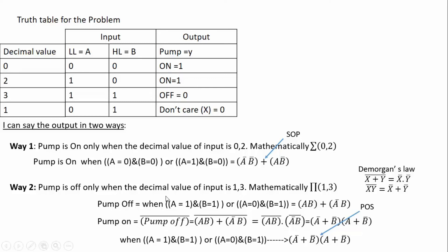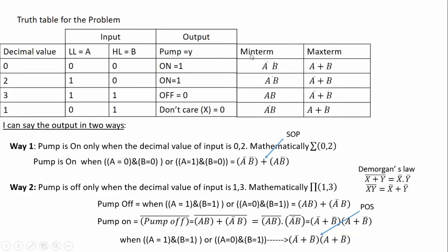In the second way, to get the pump-on expression I focus on when the output is low (pump off). A minterm for each row is formed as: 0,0 → A-bar·B-bar; 1,0 → A·B-bar; 1,1 → A·B; 0,1 → A-bar·B. A maxterm is the opposite: where the input is 0, use the variable as-is (not complemented); where the input is 1, use the complemented variable. So for row 1,1: maxterm is A-bar + B-bar; for row 0,1: maxterm is A + B-bar.